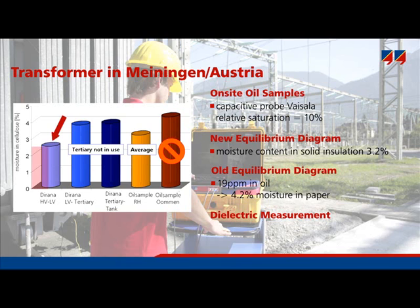By comparison, the insulation between the low voltage and the tertiary winding came to 3.6%. It can be assumed that the tertiary winding accumulated more moisture because it was not in service and hence was at a lower temperature than the other windings. The oil sample measurement based on relative saturation gave a value of 3.2%, which is a good average of the two Dirana results, and confirms that the oil sample based on the traditional equilibrium approach gives a reading which is too high.